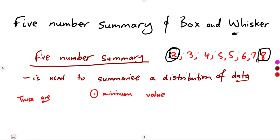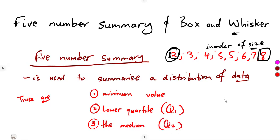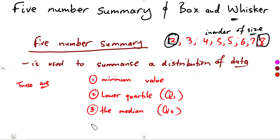The maximum is the end value. These numbers must be in ascending order of size. Then we determine the first quartile, which is the lower quartile, Q1. Number three is the median, the second quartile, which is Q2. We also need the upper quartile, the third quartile, which is Q3.